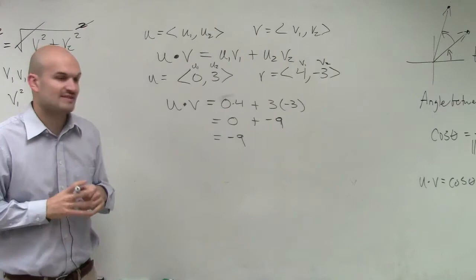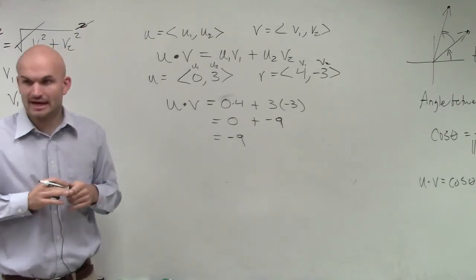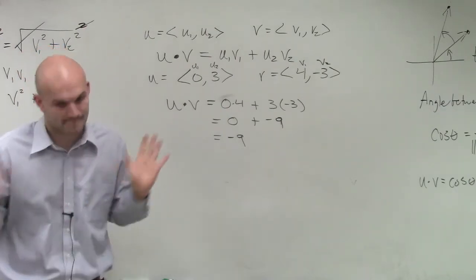So u dot v in this problem equals negative 9. OK, that's it.